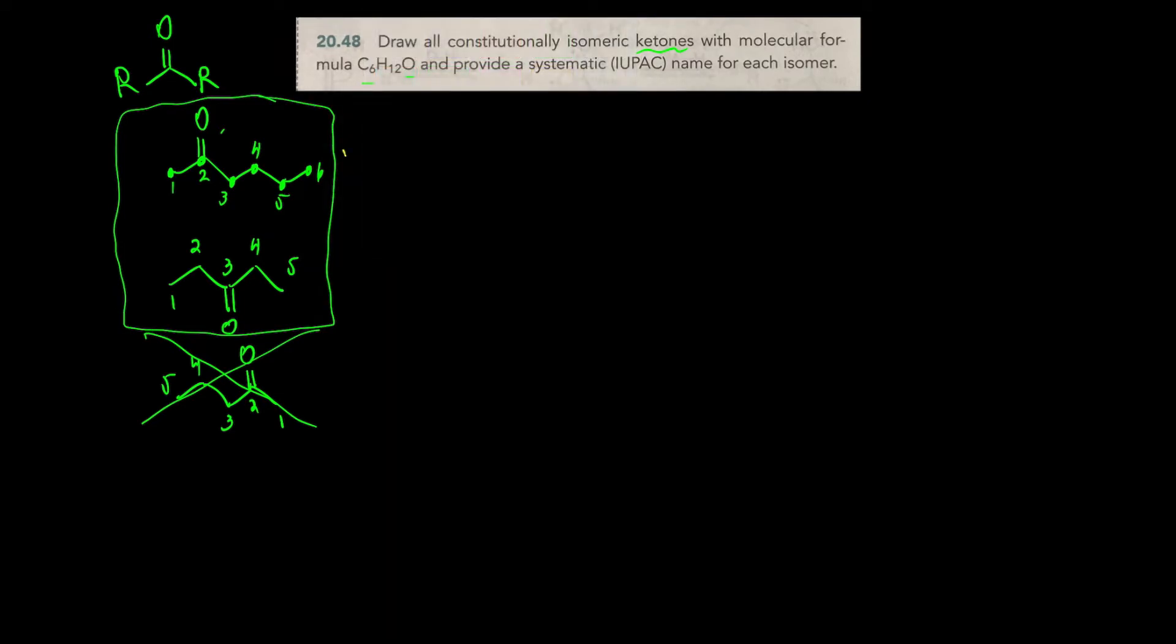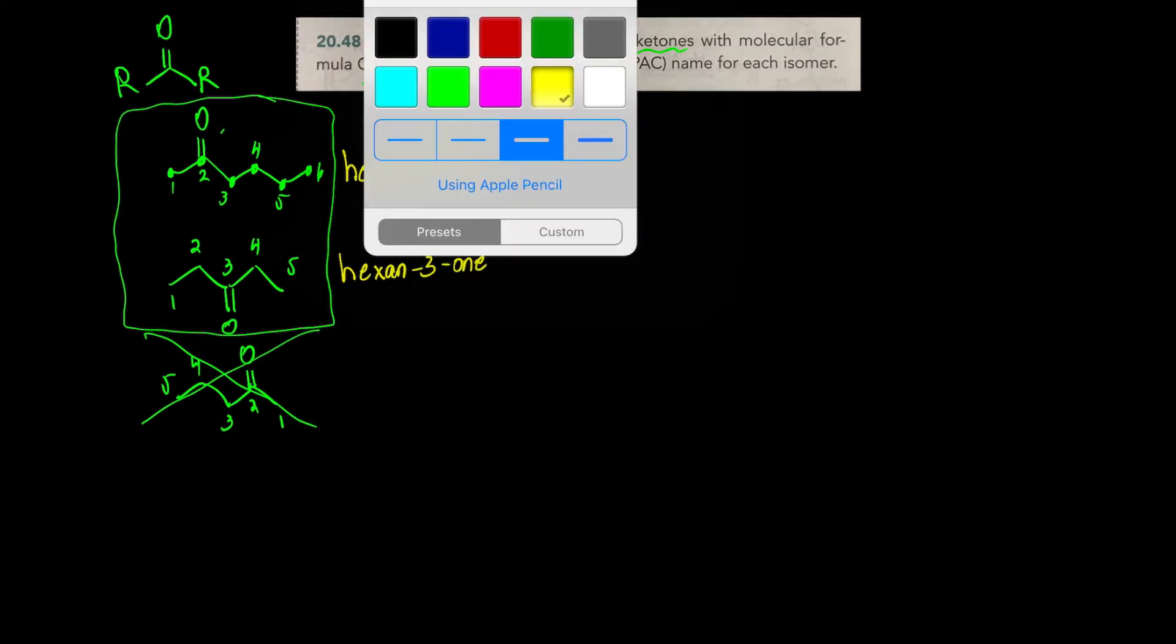Let's go ahead and name those before we move on. The name of this would be hexan-2-one. Now for ketones, you do have to indicate a number for where the ketone is located. And you can see why, because down here, this is hexan-3-one.